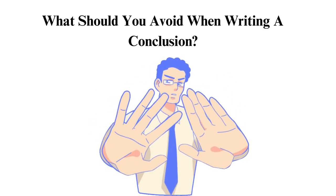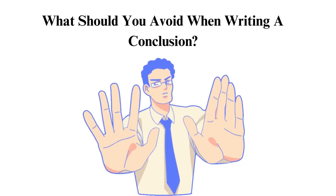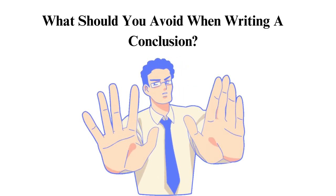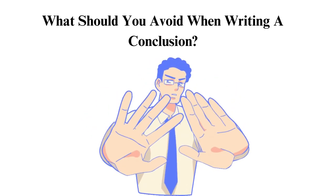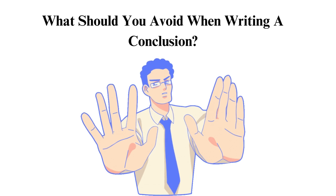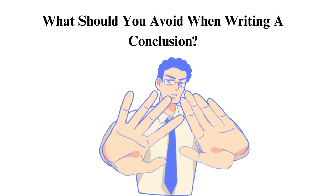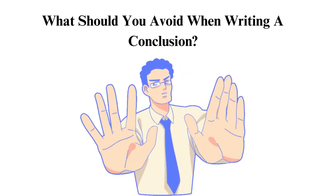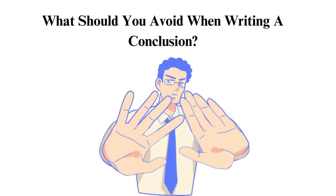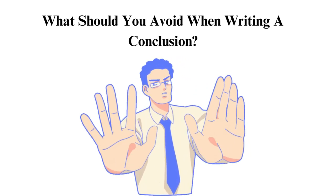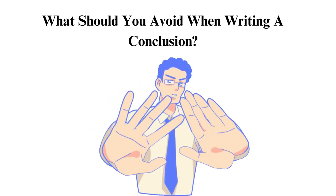2. Pathos. Do not use any emotional appeals, especially if it is an analytical essay, but rather focus on facts and evidence brought out in the previous parts of the paper. If your paper discusses or analyzes a historical figure or character, also avoid painting them as a hero or villain and simply state their deeds and the effect they had on their society.